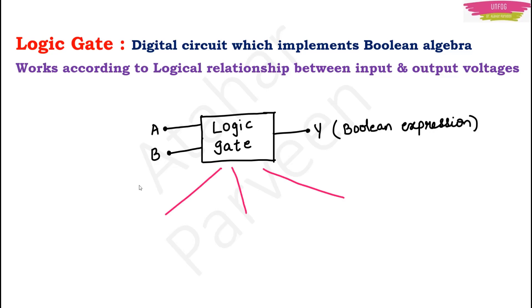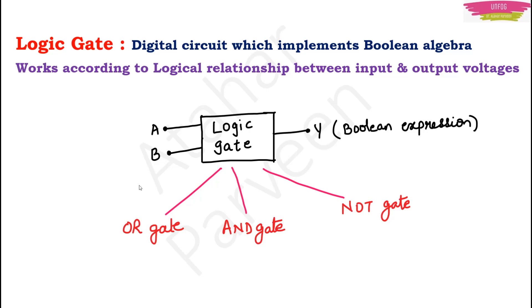There are three types of basic gates: OR gate, AND gate, and NOT gate. These are the three basic gates. There are a few more gates which are derived from the OR gate and AND gate, but the three important main basic logic gates are OR gate, AND gate, and NOT gate.